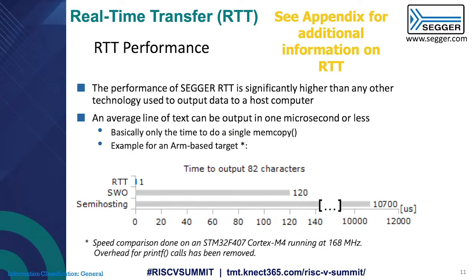The performance of RTT is higher than any other solution we know for getting information out of a target. If you have an average line of text, it usually takes less than a microsecond to output. By comparison, semi-hosting might take about 1,000 microseconds, SWO could be around 120 microseconds, and that same output can be done in just a single microsecond with RTT.